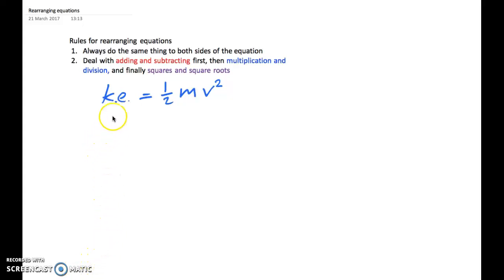In this problem, we're looking at a real physics equation for kinetic energy. Kinetic energy is the energy of a moving object, and it tells you that the energy stored in a moving object is half the mass of the object times v squared.